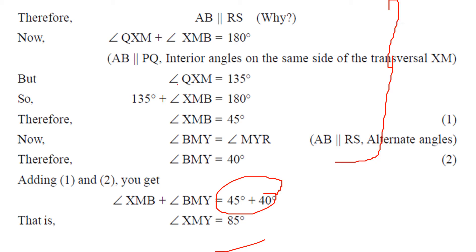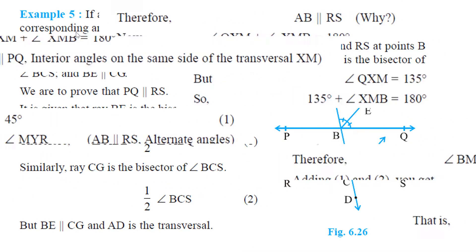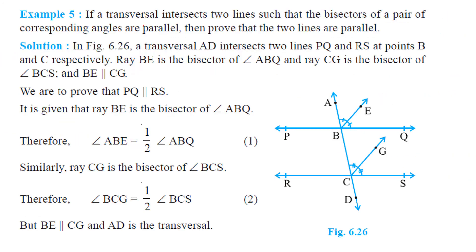There are other methods also — you can try them out. This method I showed is the simplest, just by observation. If a transversal intersects two lines such that the bisectors of a pair of corresponding angles are parallel, then we have to prove that the two lines are parallel.